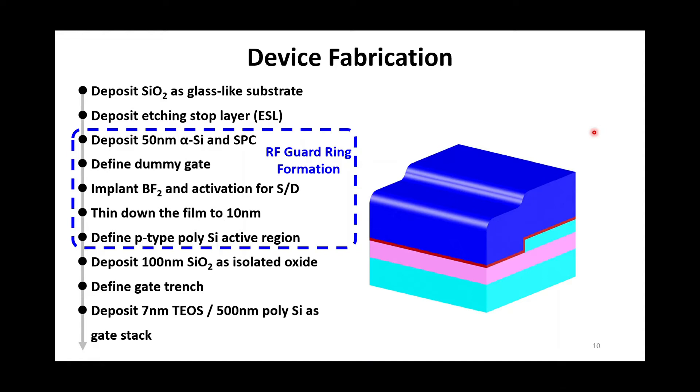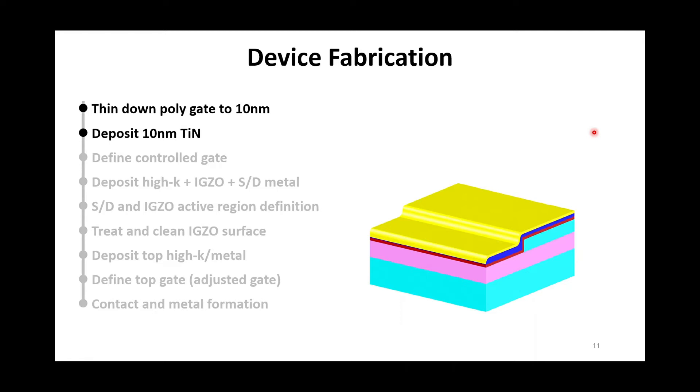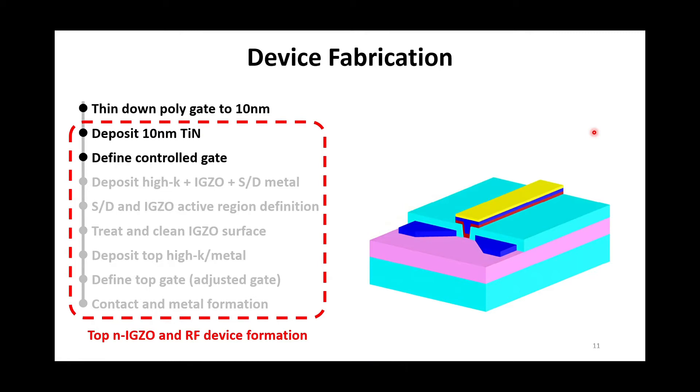Afterward, we use dry etching to thin down the poly gate to 10 nanometer and deposit TiN as the second work function gate in the HC-FET, followed by a gate pattern. Here, IGZO high-frequency device is starting to fabricate at the same time.